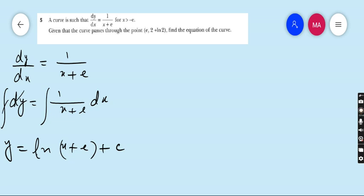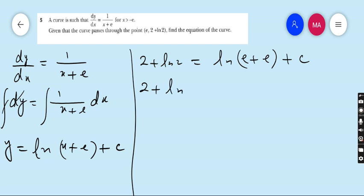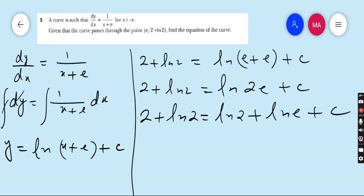Now satisfy this equation by the given coordinate. The value of y is given 2 plus ln 2 is equals to ln x plus e. X is e, e plus e plus c. 2 plus ln 2, ln e plus e is 2e. So apply the rule of logarithm. If 2 numbers are multiplied, then log can convert the number into addition. So ln 2e can be written ln 2 plus ln e plus c.